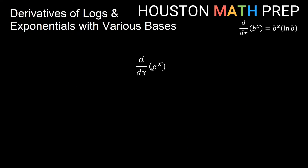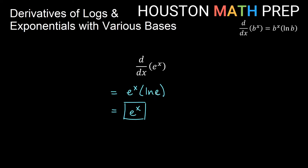If you think about our natural exponential function, look at what happens. If we want the derivative of e to the x, this formula says it would be e to the x times ln of the base — times ln of e. But ln of e is actually 1, so e to the x times 1 is just e to the x. That's why with that one, we've learned it without 'times ln of the base' attached — the derivative of e to the x was just e to the x — but this follows the same format as our other bases.